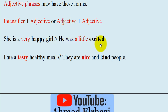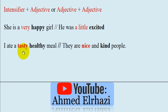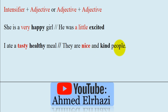Second form: adjective plus adjective. For example: he was a little excited — 'a little' is an intensifier and 'excited' is an adjective. Also: I ate a tasty, healthy meal — 'tasty' and 'healthy' are both adjectives. Another example: they are nice and kind people — 'nice and kind' together form the adjective phrase.